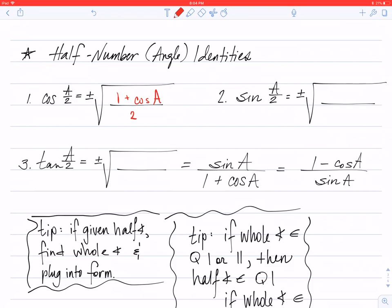The sine half angle identity will be plus or minus the square root of one minus the cosine of A, all over two. And yes, I did intend to write cosine of A there.